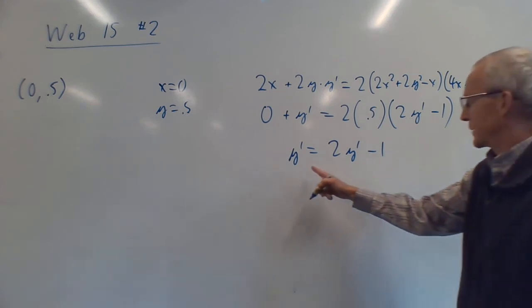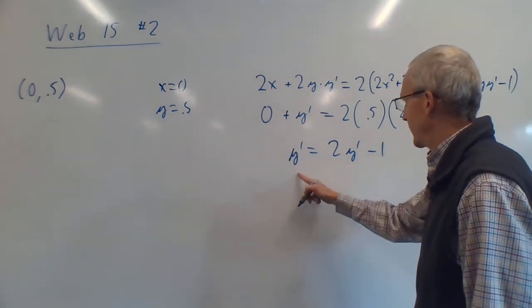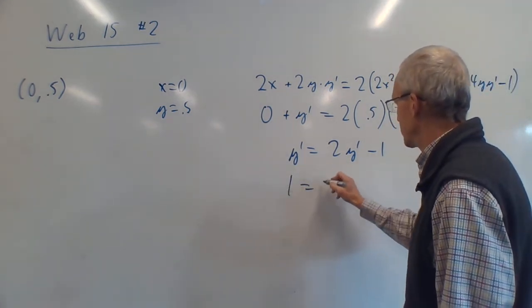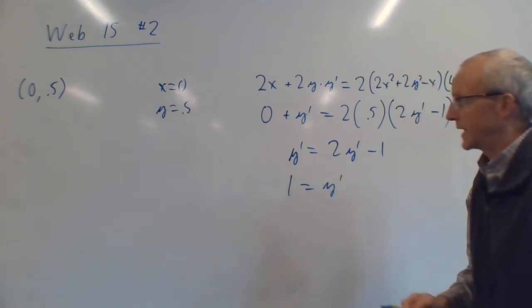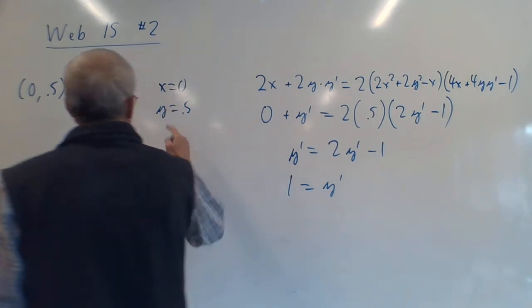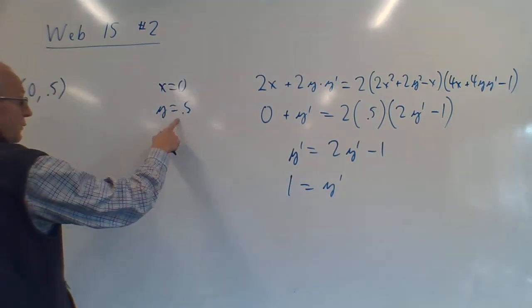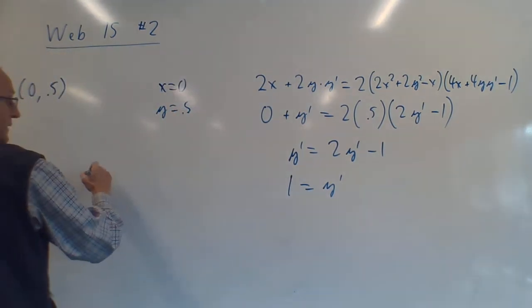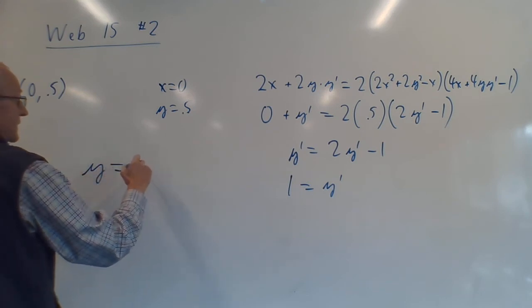Let's see, I'm going to put the y' over here, the 1 over there, so I think I just get 1 = y'. Whoa, that's nice! My slope is 1, so the tangent line is super easy. The y-intercept is 0.5, the slope is 1.